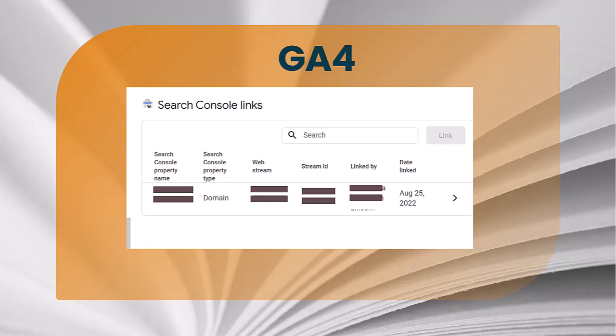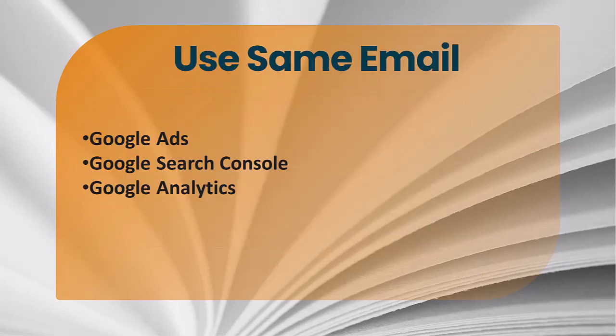The interface shows the console property name, property type (whether it's a web or app property), the web stream, and the date it was linked. This shows an example of one that is already connected to Search Console. If you click on that button and nothing's there, you'll want to click the blue Link button, and if you already have your Search Console connected to that email address it will show up.